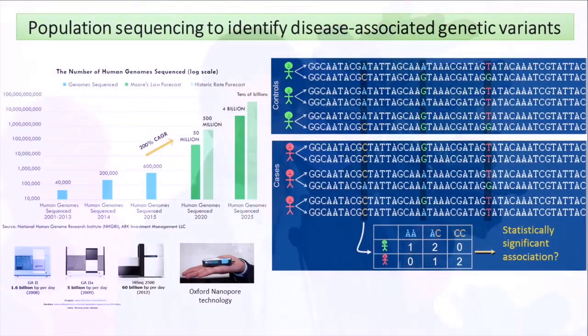A really cool application of this is to disease. You can take normal, healthy control individuals and contrast their genomes against cases — people who actually have a specific disease. You can start finding genetic variants that associate statistically with the disease, pinpointing genetic positions in the genome that associate with the disease of interest.